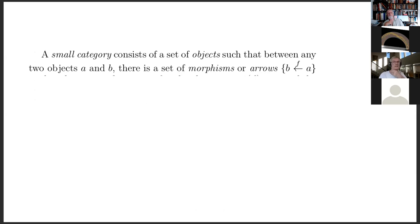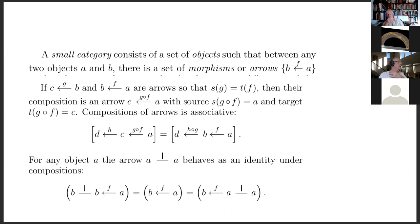A small category consists of a set of objects such that between any two objects A and B there's a set of morphisms or arrows. If we have arrows G with source B and target C, and F with source A and target B, so that the source of G equals the target of F, then their composition is an arrow with source A and target C. Composition of arrows is associative, and for any object there is an identity arrow that behaves as an identity under composition.